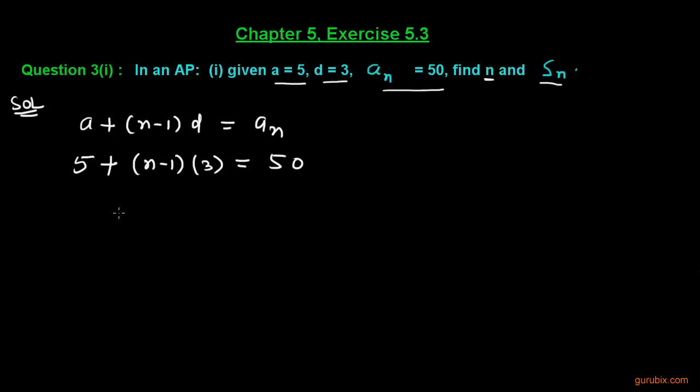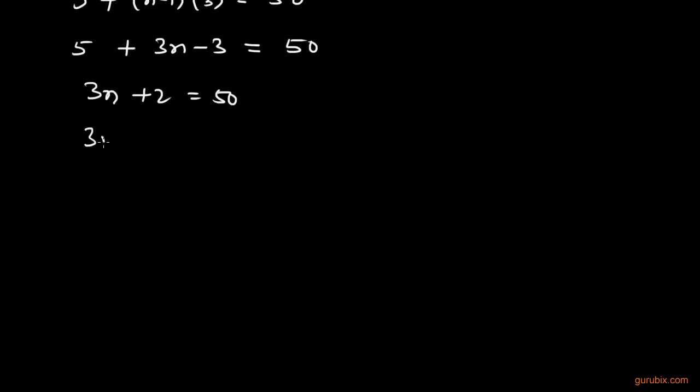Now we shall calculate this value. Substituting gives 5 + 3n - 3 = 50. Simplifying, we get 3n + 2 = 50. Therefore, 3n = 50 - 2, which equals 48.